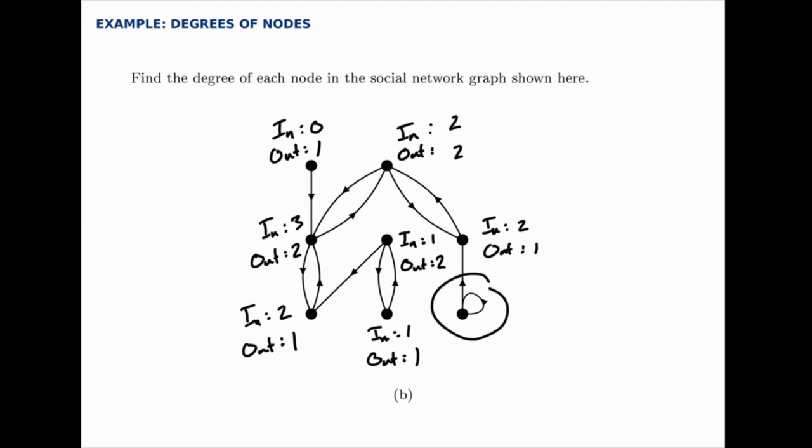And then lastly, again notice here, the loop can throw you off, but just think of it as an edge that both goes out and comes into that node. So going out from this node, there's one, and also the loop. And coming into it, there's just the loop. So there's one coming in, and two going out.